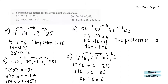Next, for C, we have negative 13, negative 39, negative 117 and negative 351. In between these numbers, negative 13 times 3 is negative 39. Negative 39 times 3 is negative 117. And negative 117 times 3 equals to negative 351. So the pattern here is times 3.